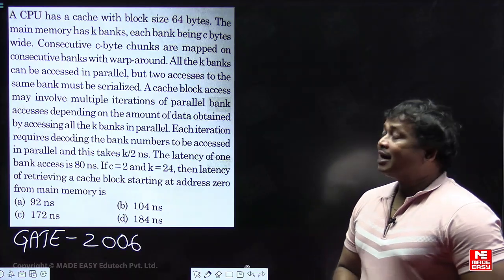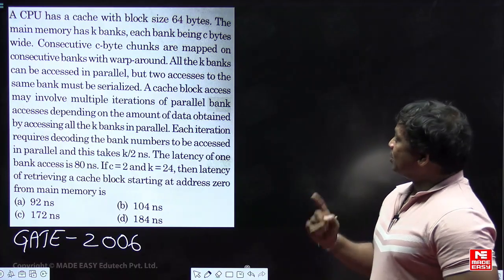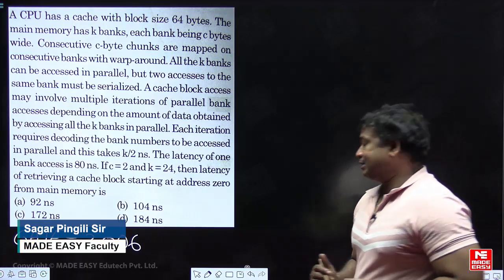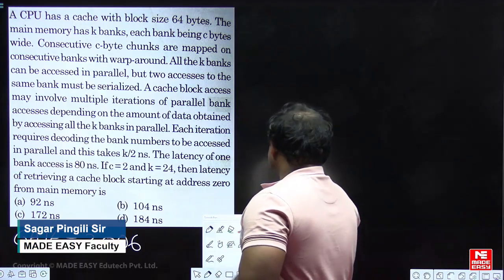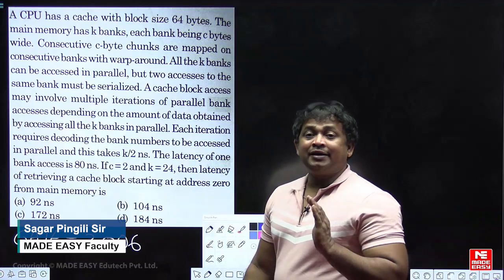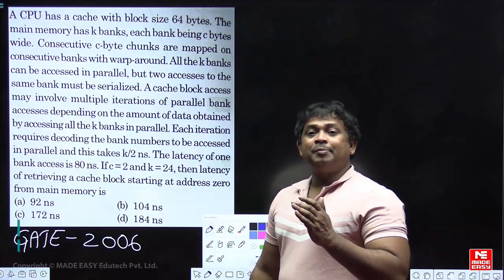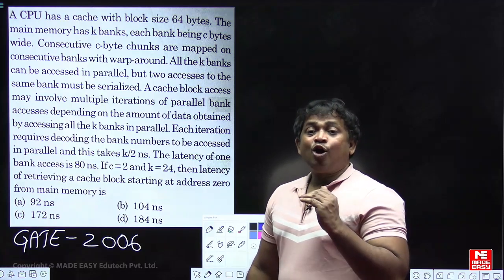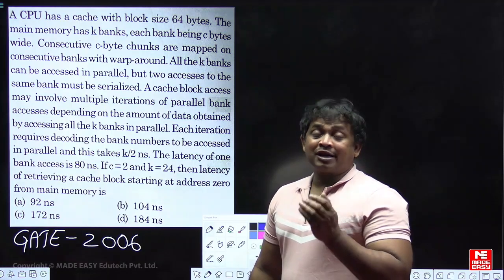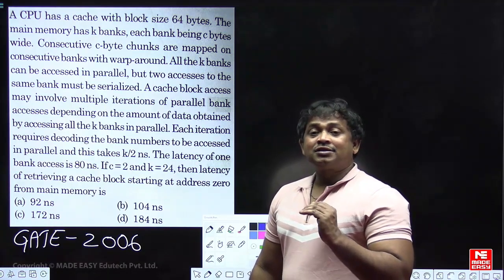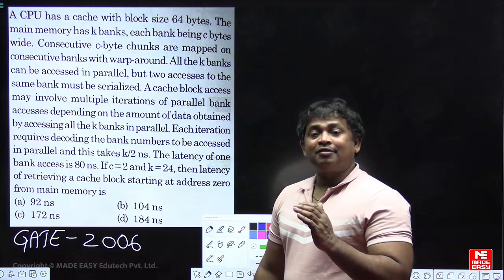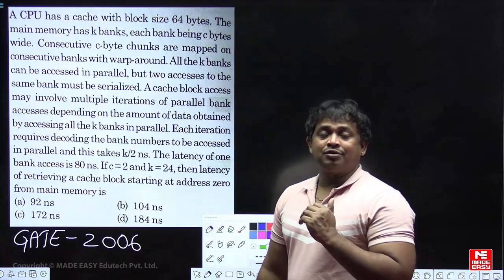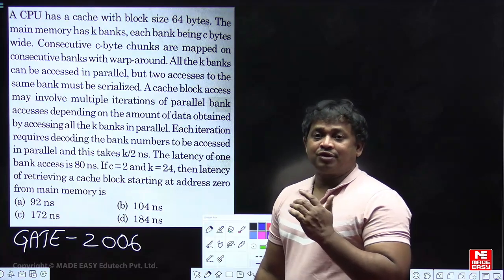In this question, cache memory block size is given as 64 bytes. We need to access that 64 byte data from the main memory. After that we need to calculate how much time is required to access 64 bytes of data from the main memory unit. That is the objective of the question.